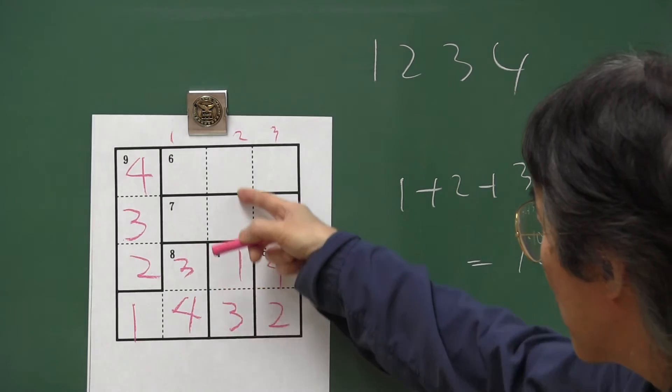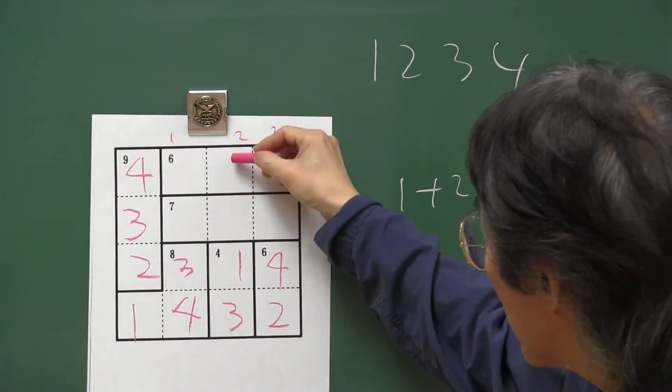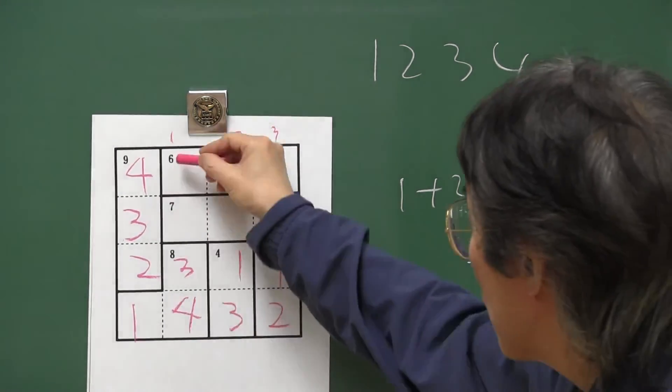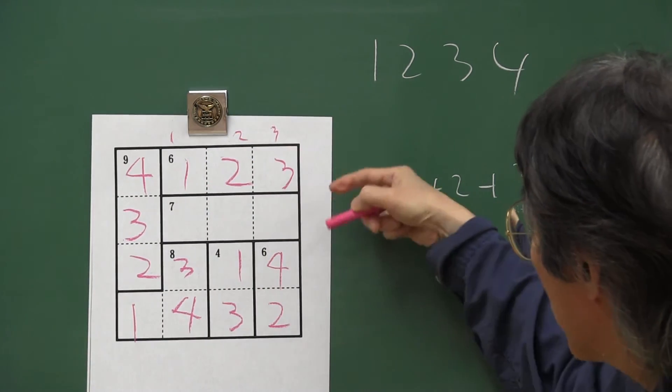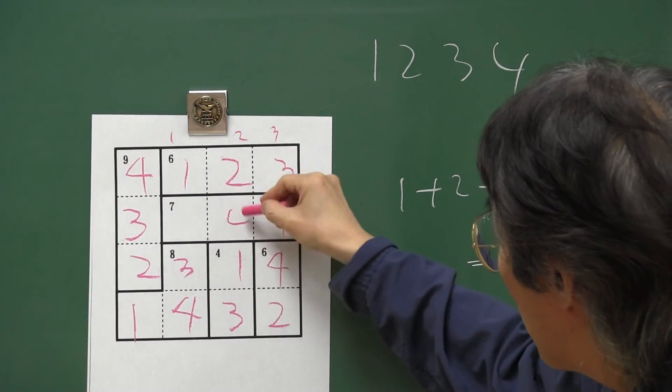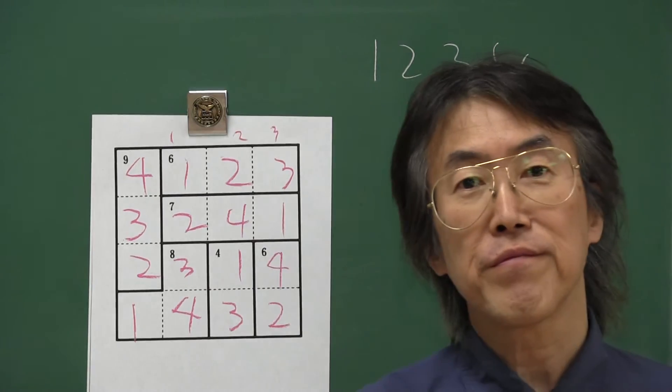And one, three. One, two, three, then here is two. And here is one, here is three. One, four, two. One, four.